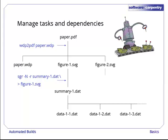To recreate figure1.svg, we run sgr-n-r summary1.dat and send the output to figure1.svg. The backslash in the slide is not part of the command, it's just the standard Unix way to break a line into pieces. Again, it doesn't matter for now what the sgr command actually is. What matters is that we need to run it whenever figure1.svg is out of date, i.e. whenever it is older than the summary1.dat file it depends on.